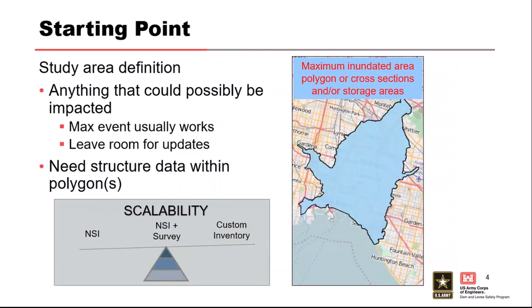Where do you start? You want to have an idea of what area of interest you have — some sort of RAS output to say, here's my study area, here's the potentially inundated area, so I know I need to gather information on structures within that polygon. You might want to buffer that a little bit because the hydraulic model might be updated. You might also be interested in surrounding areas due to shadow evacuation concerns. You can start by pulling down the National Structure Inventory, the NSI, and make adjustments to it. Generally, the higher the level of study, the more adjustments you want to make to your base inventory.